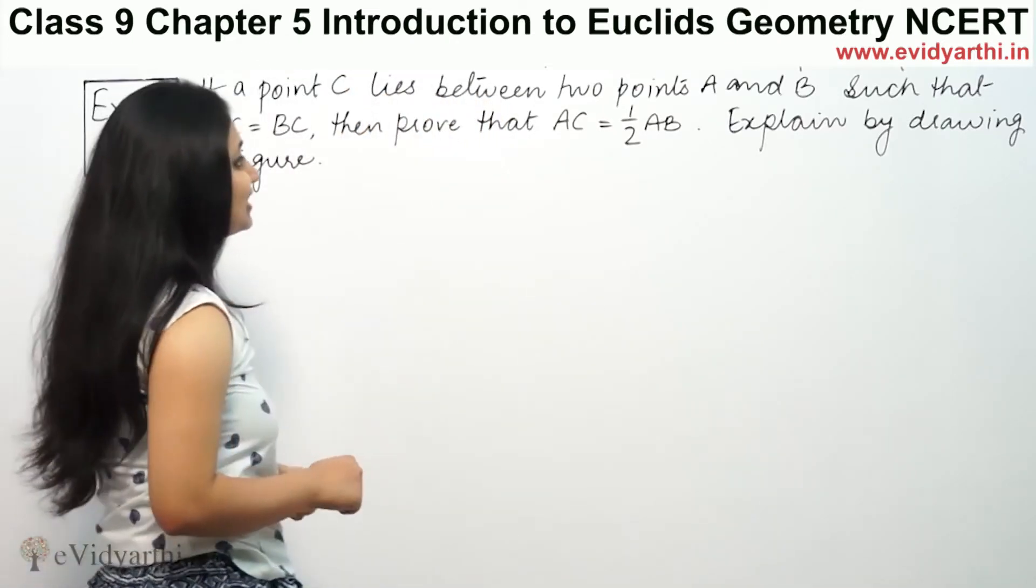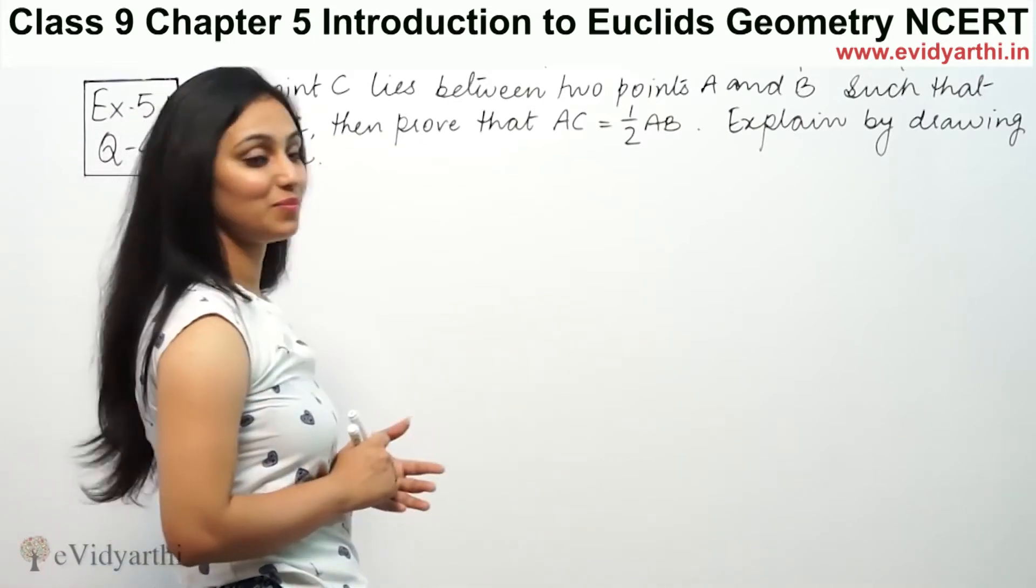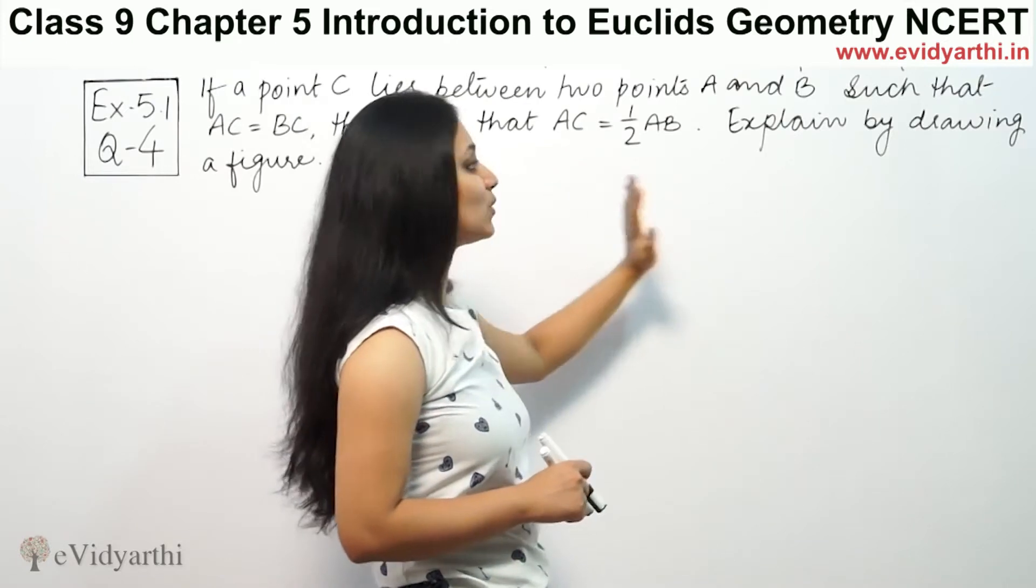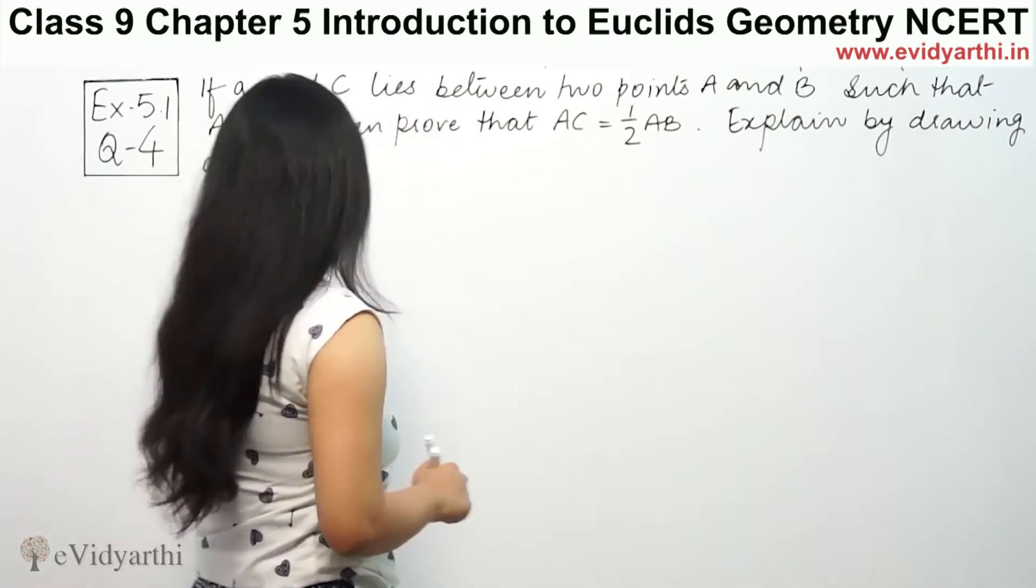It says that point C lies between two points A and B such that AC is equal to BC. Prove that AC is equal to half AB by explaining and drawing the figure.